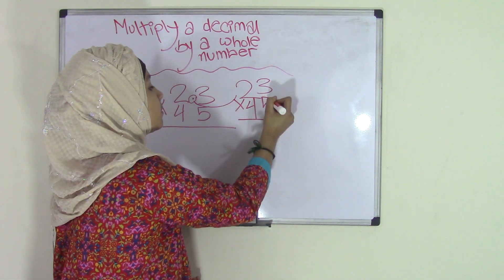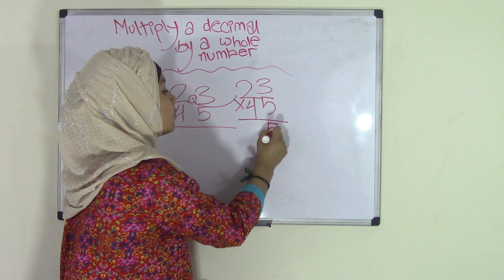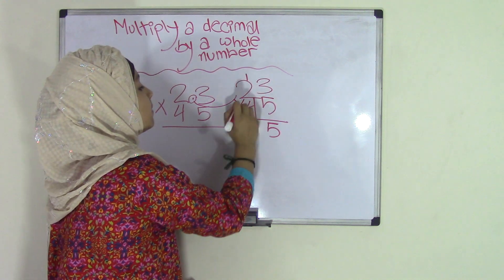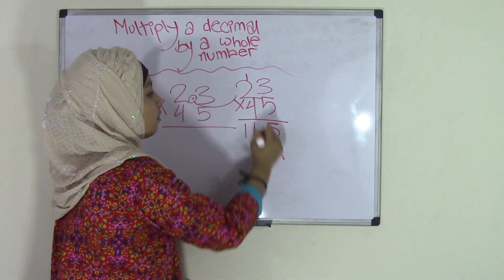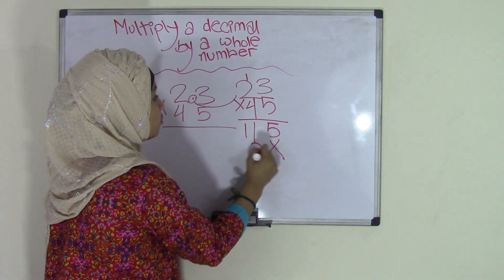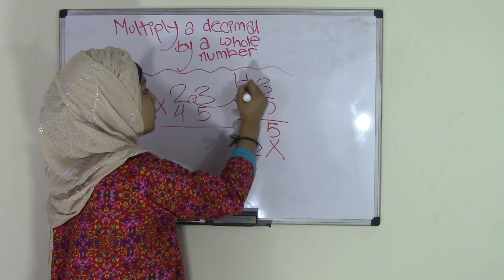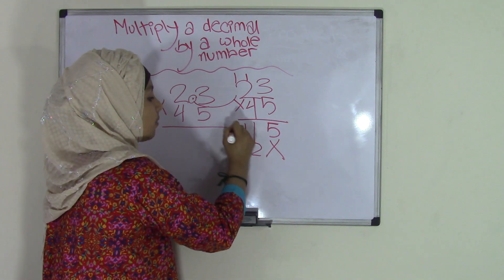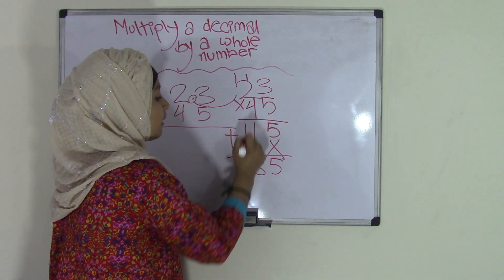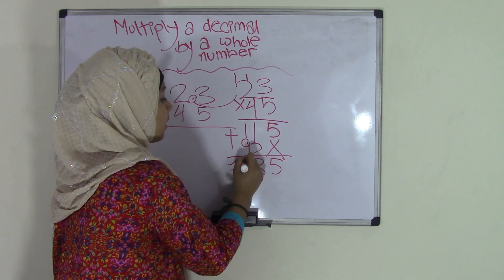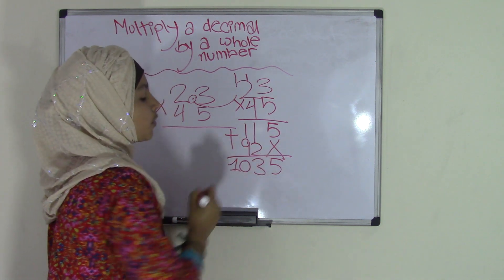So, we know that 3 times 5 is 15. So, 5 carry the 1. 5 times 2 is 10 plus the 1 equals 11. Now, we have 4 times 3 is 12. So, 2 carry the 1. 4 times 2 is 8 plus 1 is 9. Now, we add these. So, 5, 2 plus 1 is 3, and 9 plus 1 is 10. That means we have 1035.